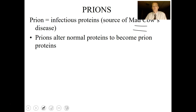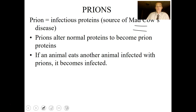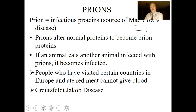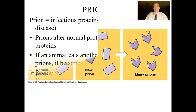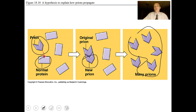Prions alter normal proteins to become prion proteins; if an animal eats another animal infected with prions it can become infected. People who visited certain European countries and ate tainted red meat cannot donate blood. Creutzfeldt-Jakob disease is a prion disease transmitted human to human. You don't want to be a cannibal, because eating infected brain tissue would transmit prions. A prion keeps replicating until your entire brain is composed of prion proteins — which is not good.